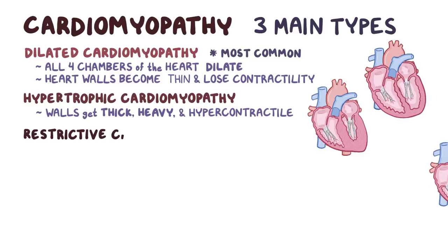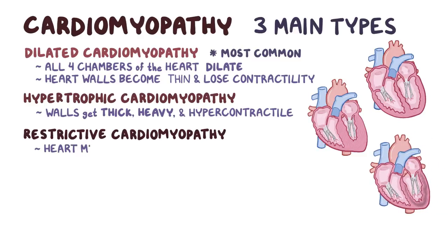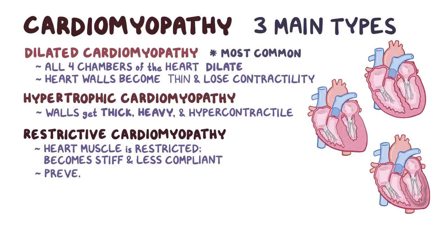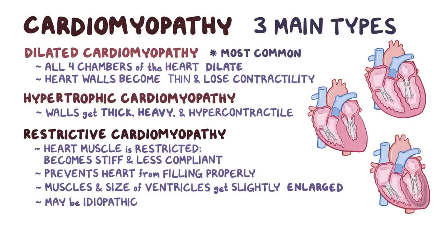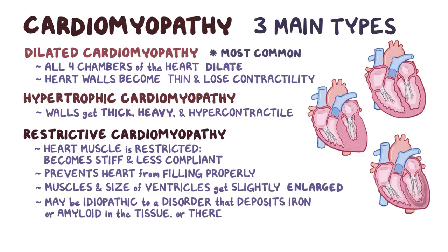Finally, there's restrictive cardiomyopathy, which is where the heart muscle is restricted, meaning it becomes stiff and less compliant, and that prevents the heart from filling properly. The muscles and size of the ventricles stay about the same size and only get slightly enlarged. Restrictive cardiomyopathy may be idiopathic, or secondary to a disorder that either deposits harmful substances, like iron or amyloid, into the heart tissue, or there's fibrosis caused by immune cells or radiation.